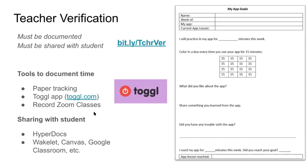If students complete all the activities and turn them in — in my case through Google Classroom — I can verify that they did the assignment and give them feedback. Because I know that if I gave the hyperdoc lesson in class it would take a certain amount of time, like two hours, I can give them two hours of credit for completing it at a distance. Other tools you can use include Wakelet, Canvas LMS, or Google Classroom to set up lessons. Using your experience with how a lesson goes in your classroom, you can assign a number of hours or minutes if the student completes it at a distance. The bit.ly link on the page has examples of hyperdoc lessons and hyperdoc templates, as well as a copy of the My App Goals printable and other resources.